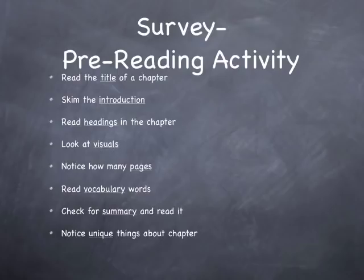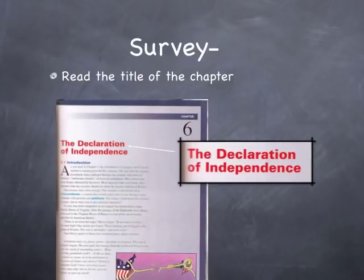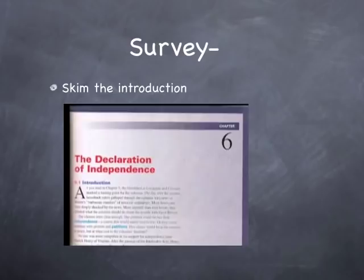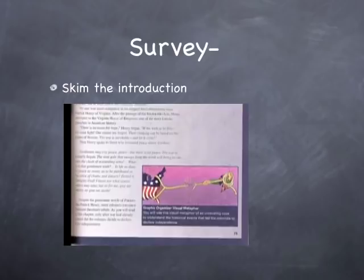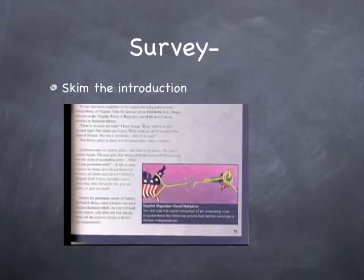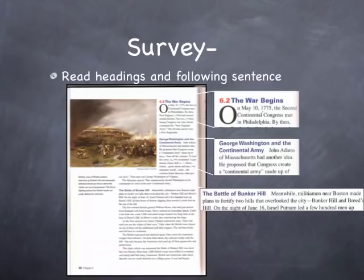Let's look at these steps in detail. Read the title of the chapter — this is found at the beginning of the chapter and is distinguished by a larger font or color. Skim the introduction — the introduction is representative of the chapter as a whole and usually sets the stage for themes and ideas. When skimming, do not read every word; instead, look for names, dates, and any unusual verbs.